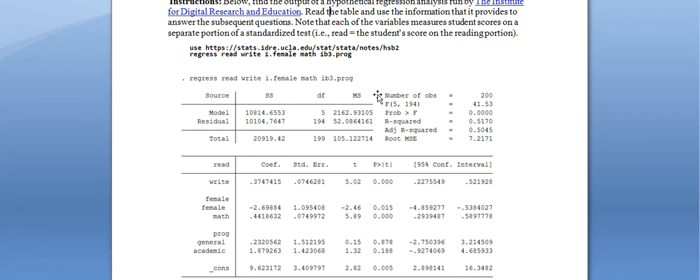You generally want more observations rather than fewer. You usually can't get reliable results if your total number of observations (n) is 50 or lower — and that's really stretching it. I don't usually recommend running a regression with fewer than 100 to 200 observations; ideally you want substantially more. But 200 is an acceptable number here.